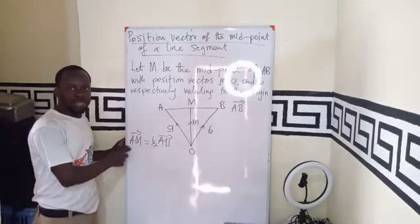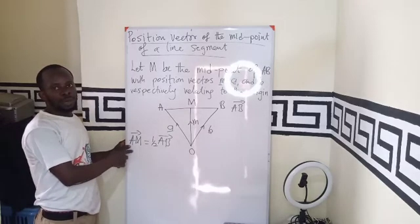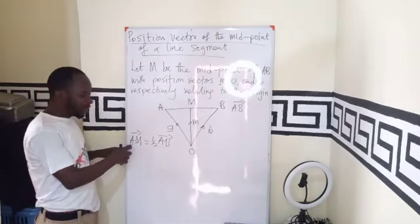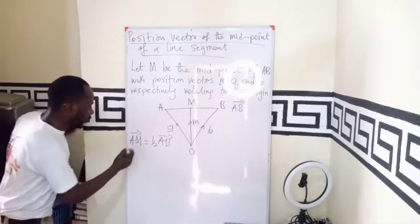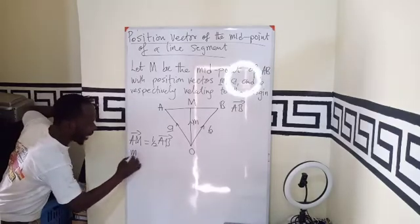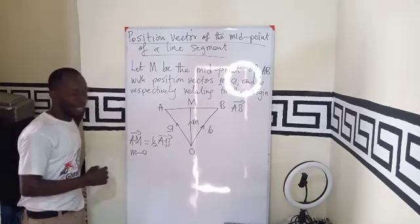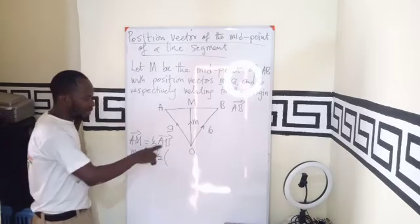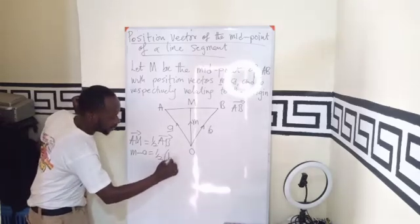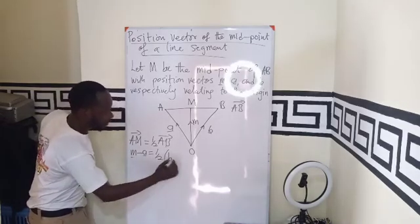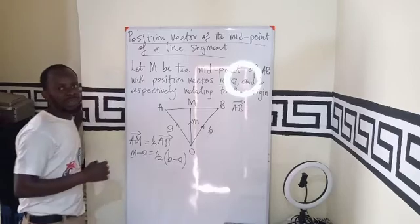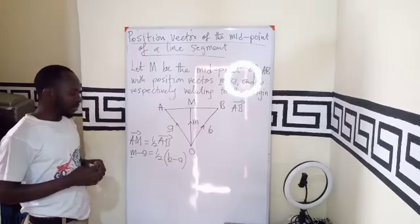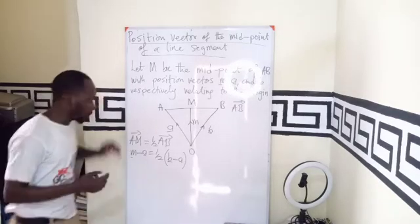If we want to find position vector of vector AM, we normally know that it is the position vector of the end point minus the position vector of the initial point. So here is going to be the end point M minus the initial point A equals to half. Finally, the position vector of AB will be the end point B minus the initial point.